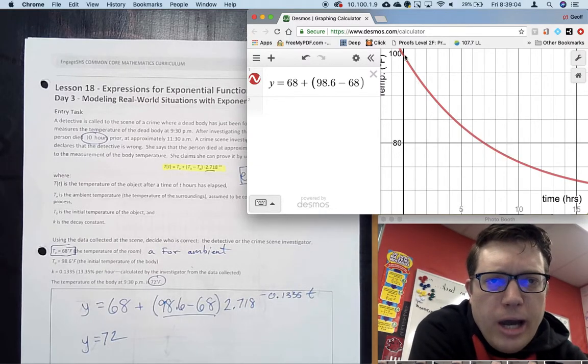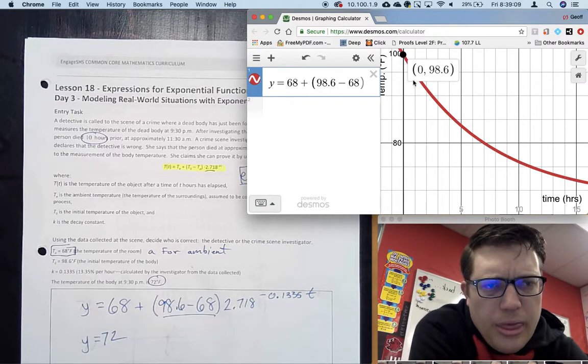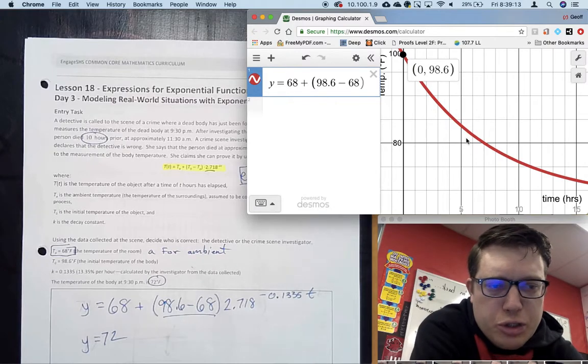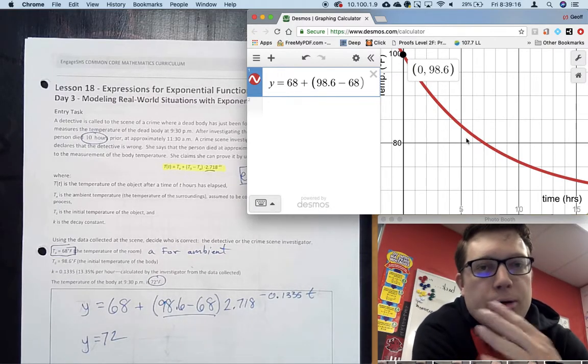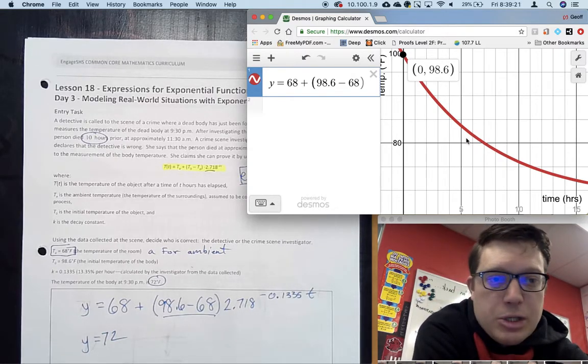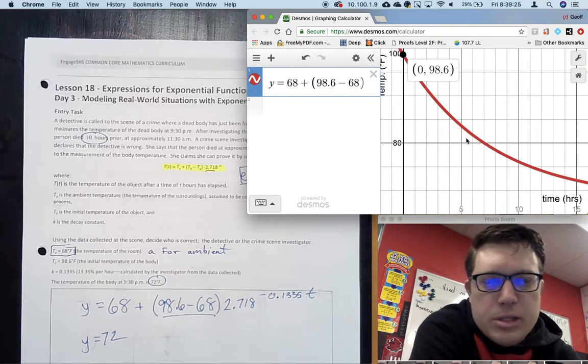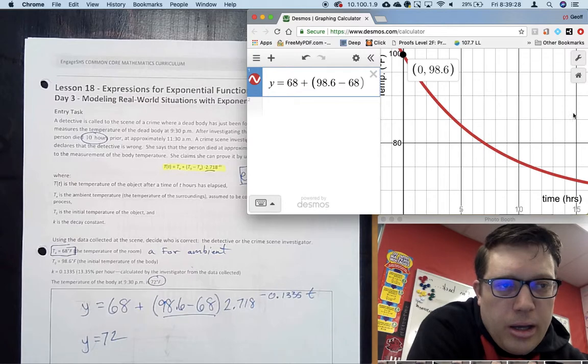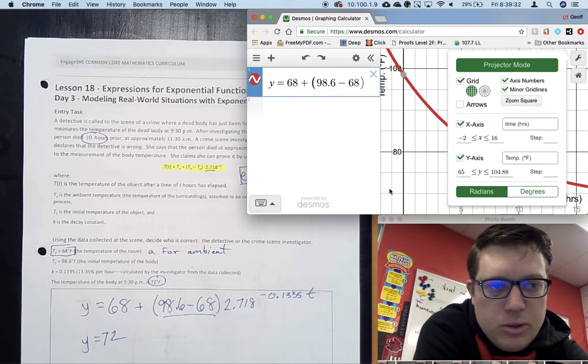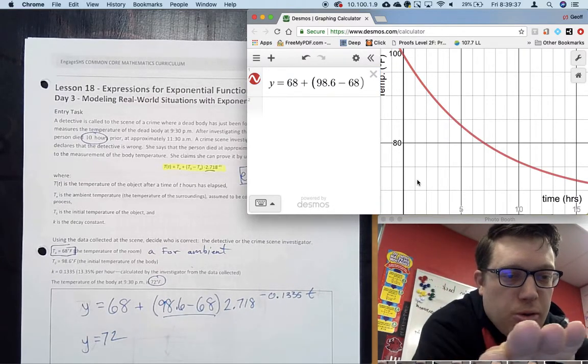On this graph we have our y-intercept at 98.6, which shouldn't be a surprise. Then we see the temperature isn't decreasing linearly - it's not a straight line decline, it's curving. This is percent change over time. The colder you are, the faster you decrease in temperature. You approach on a curved slope to the actual value.